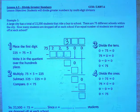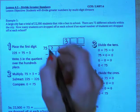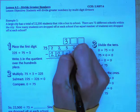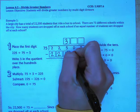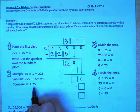Step 2 is to multiply 75 times 3 which equals 225. So we're going to write that in here and subtract 225 minus 225 is 0. Compare 0 is less than 75 so we can continue dividing.